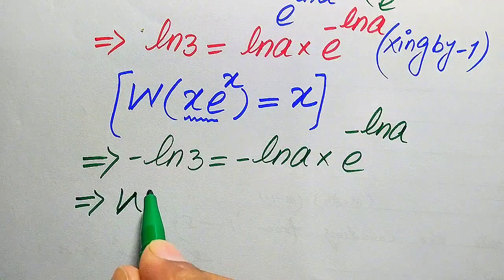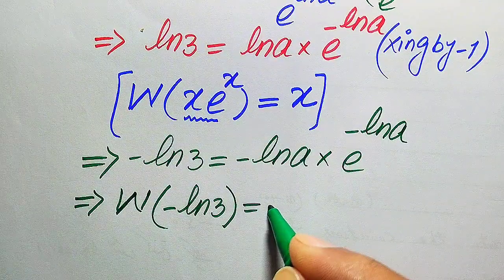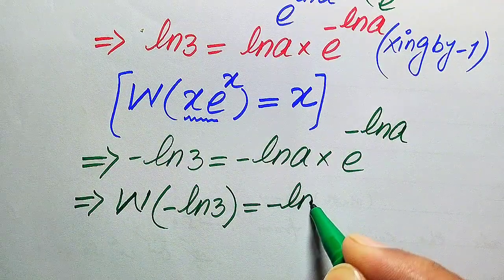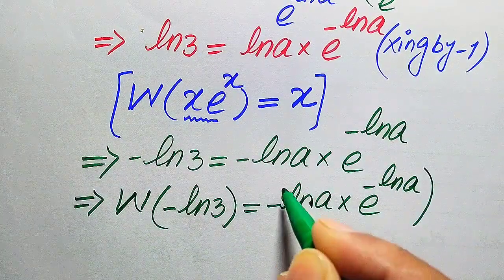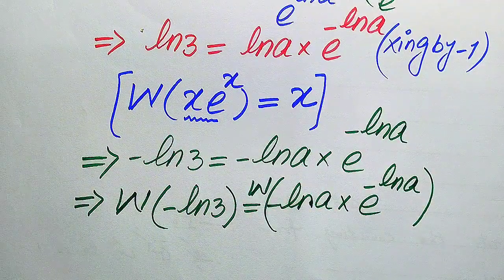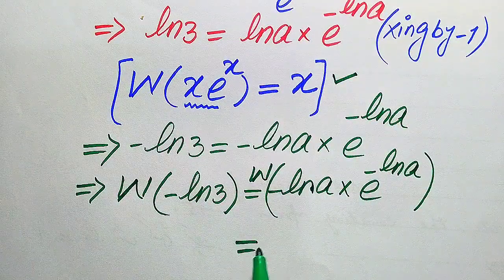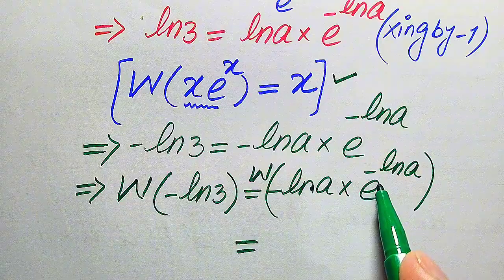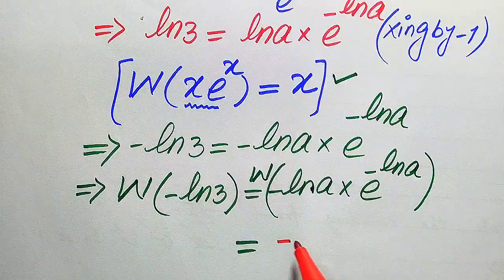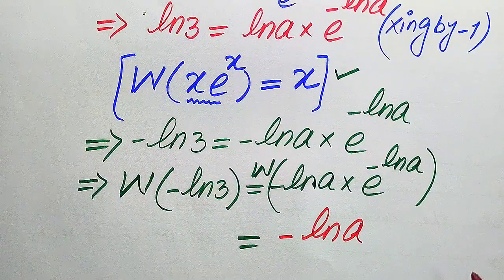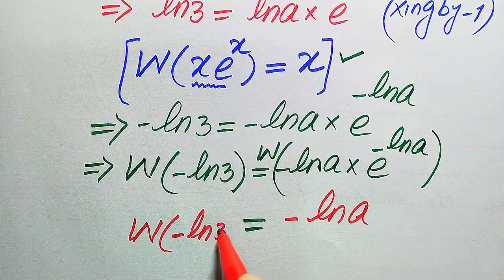Now we are ready to apply the Lambert W function. We apply W on both sides: W of minus log 3 equals W of minus log a times e to the power of minus log a. By the definition of the Lambert W function, the output on the right-hand side is the exponent of e, which is minus log a. So we get: W of minus log 3 equals minus log a.